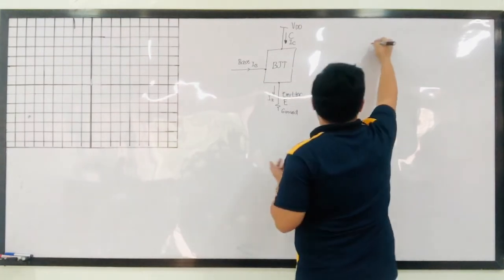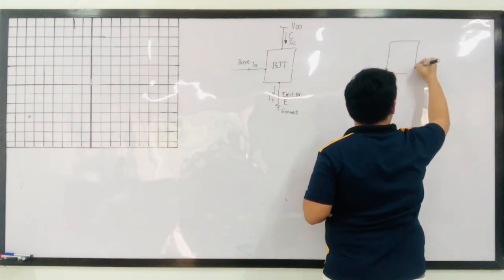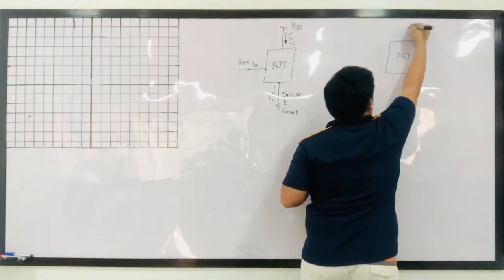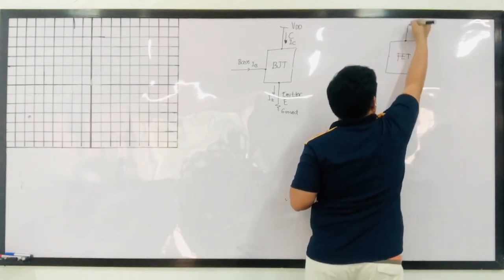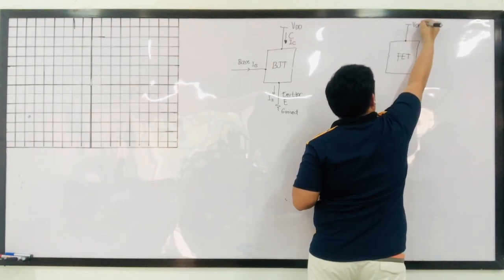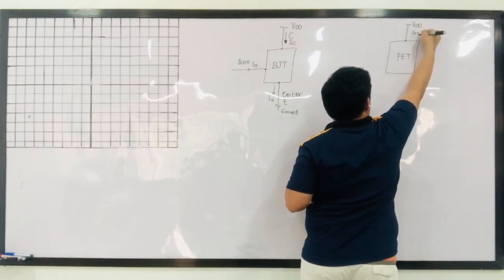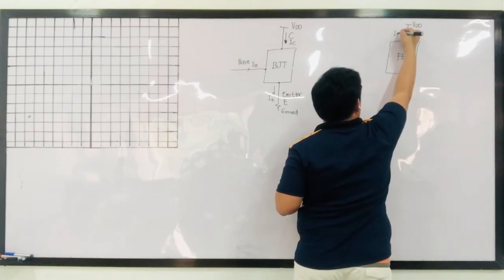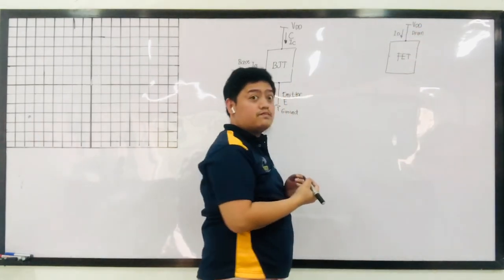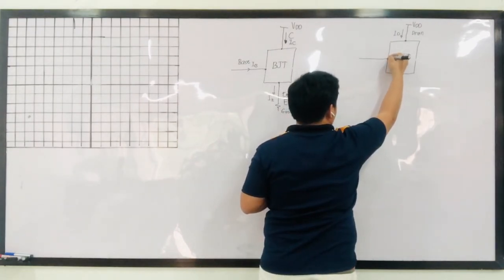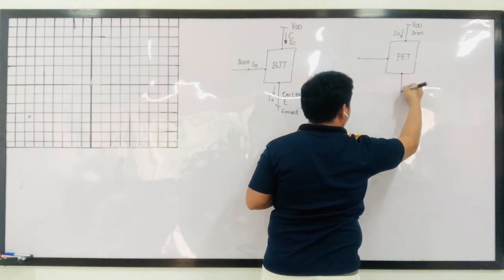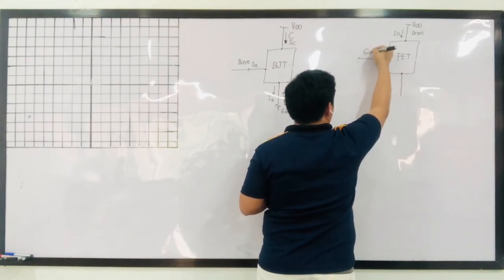Whereas for our FET — field effect transistor — you have here connected to your VDD is your drain, defined by current ID. Here you have your gate, defined by your current IG.